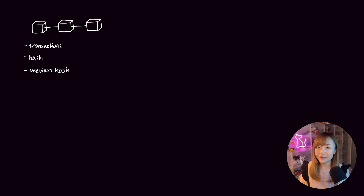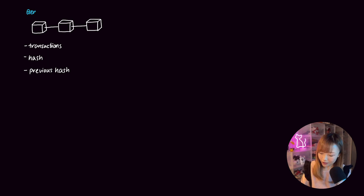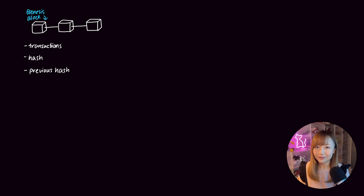This could be used for validation or simply as a reference to the previous block. The very first block in the blockchain is what we call a genesis block. A genesis block would not have any information about its previous block because it is the first block in the blockchain.